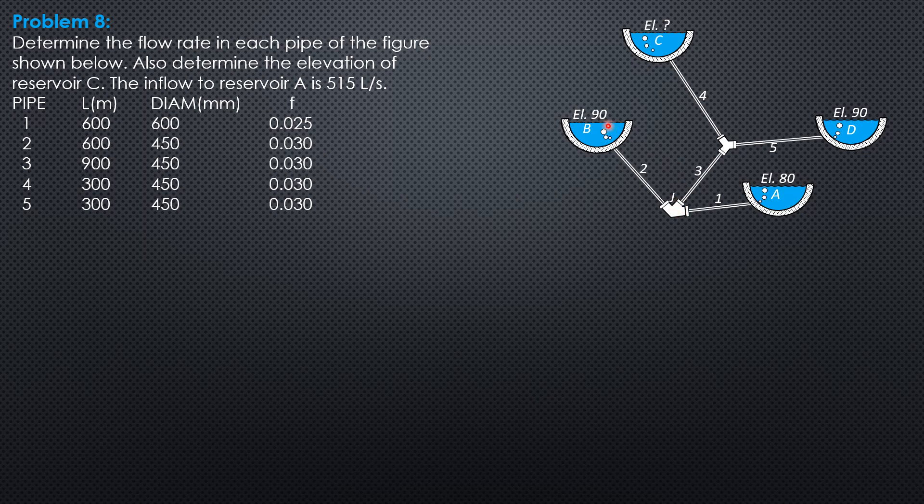Then from there, we can compute the elevation and the head losses of the other pipes connected to this junction. And from there, we can compute the discharges and head losses of the other pipes.